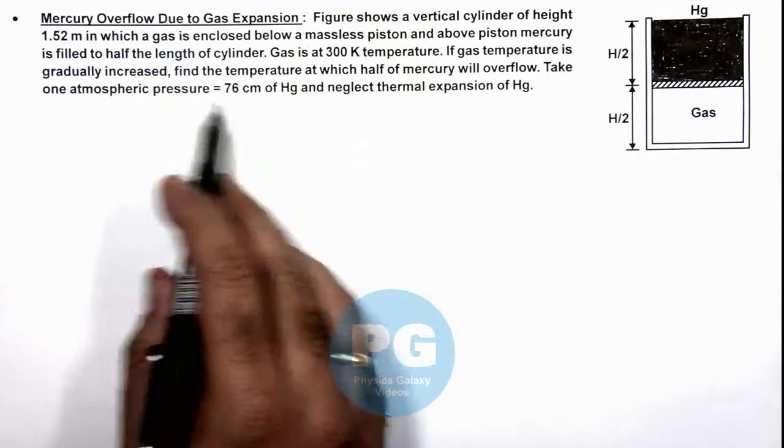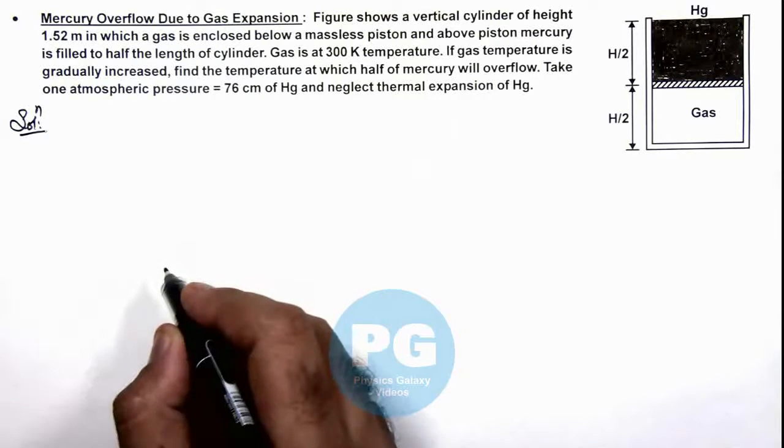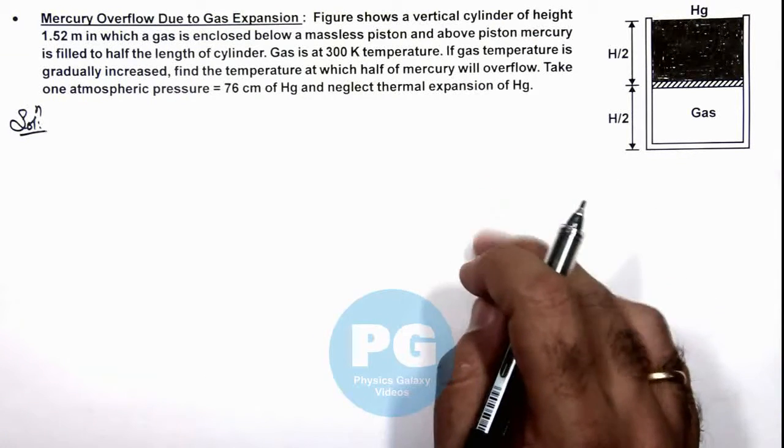One atmospheric pressure is given to us as 76 centimeters of mercury, and we can neglect the thermal expansion of mercury.